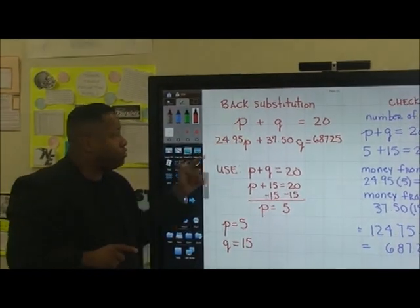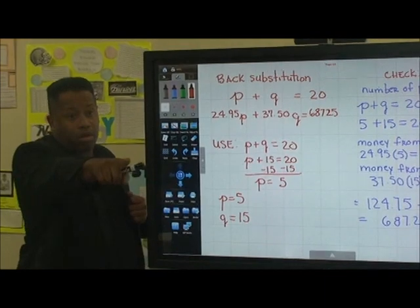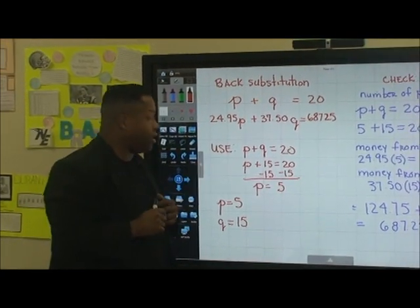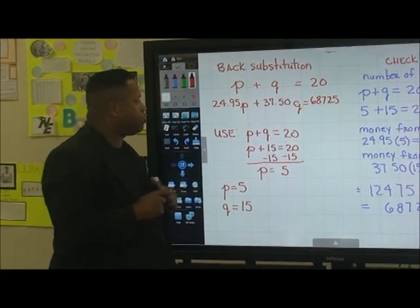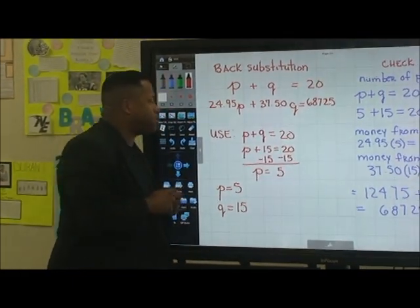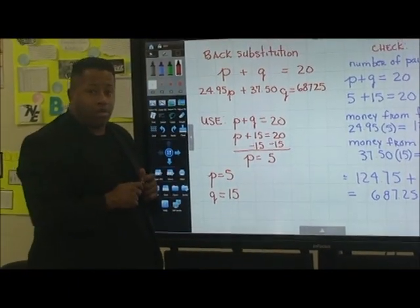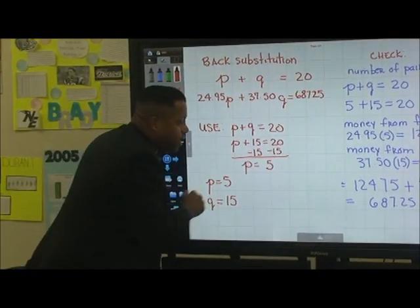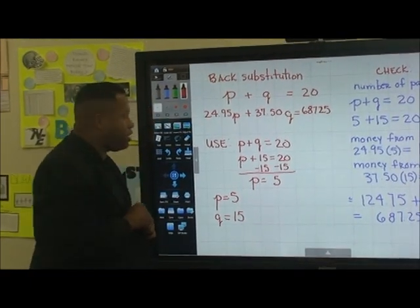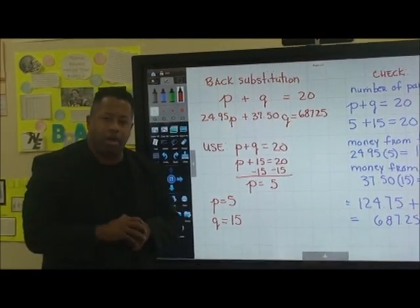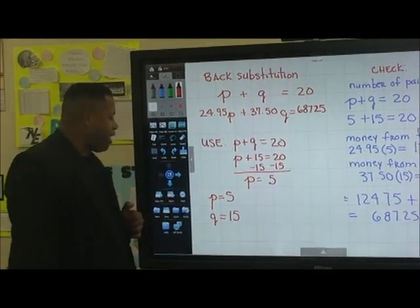So writing this equation, we want to use this equation for the G being 15 and to solve for P. So here we have P plus G is equal to 20, and so P plus 15 is equal to 20 because G is equal to 15. We're going to take and solve for P. And so we're going to take negative 15 to both sides of the equation. And here we get for P we get 5. So P is equal to 5, G is equal to 15.